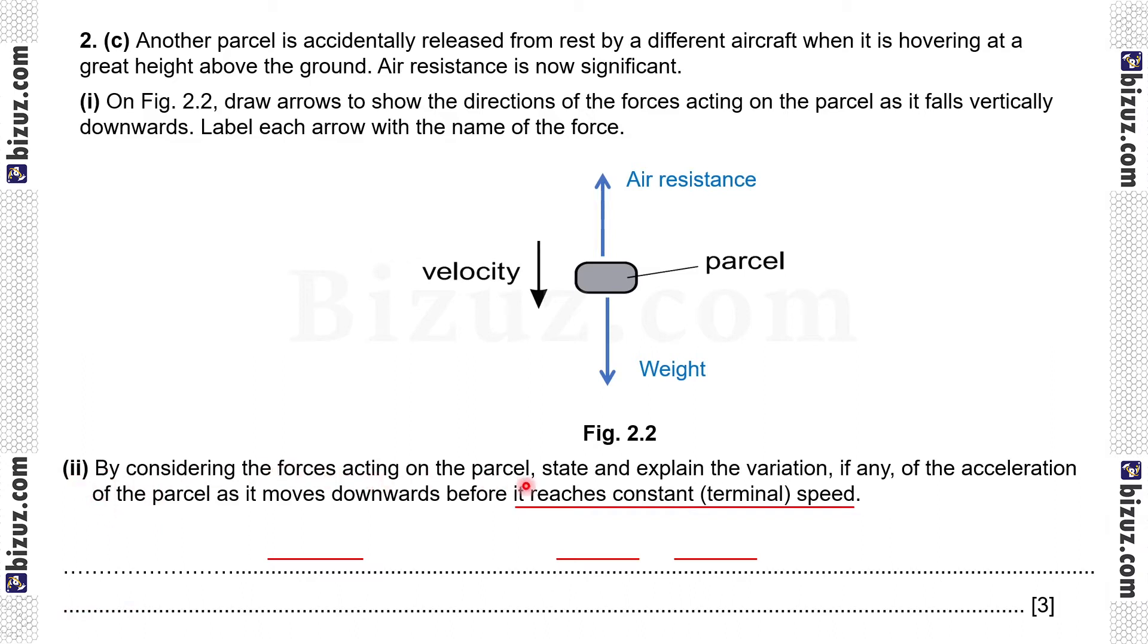2c2, by considering the forces acting on the parcel, state and explain the variation if any of the acceleration of the parcel as it moves downward before it reaches constant speed. Air resistance increases and the weight remains constant. So resultant force decreases. Therefore, acceleration decreases. If resultant force decreases, then according to Newton's second law, acceleration must decrease.